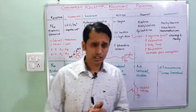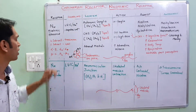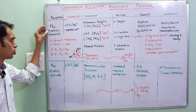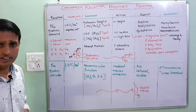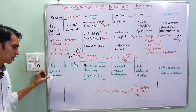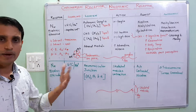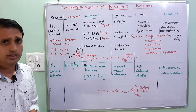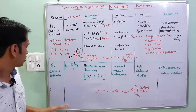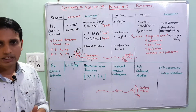The nicotinic receptors are divided into two types. First is the NN receptors, known as the nicotinic neuronal receptors, and second is the NM receptors, known as the nicotinic muscular receptors. Based on their location, NN receptors are mainly found in the autonomic ganglia, while NM receptors are mainly found in the neuromuscular skeletal junctions.